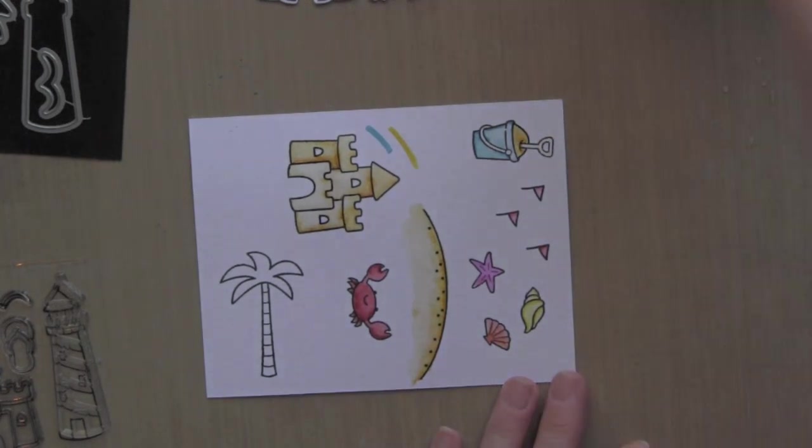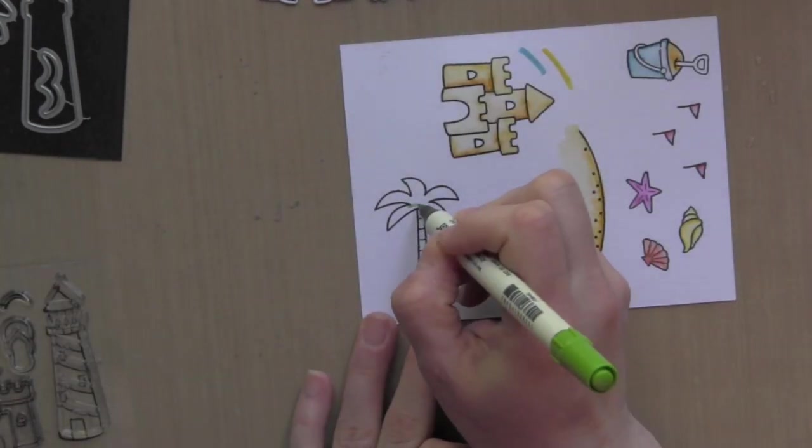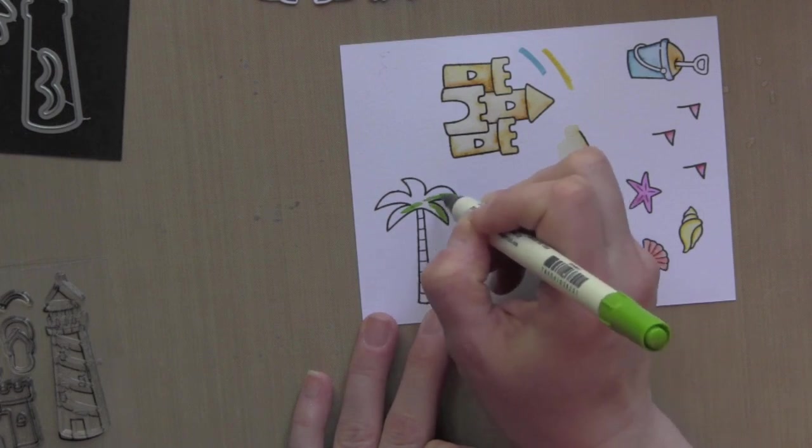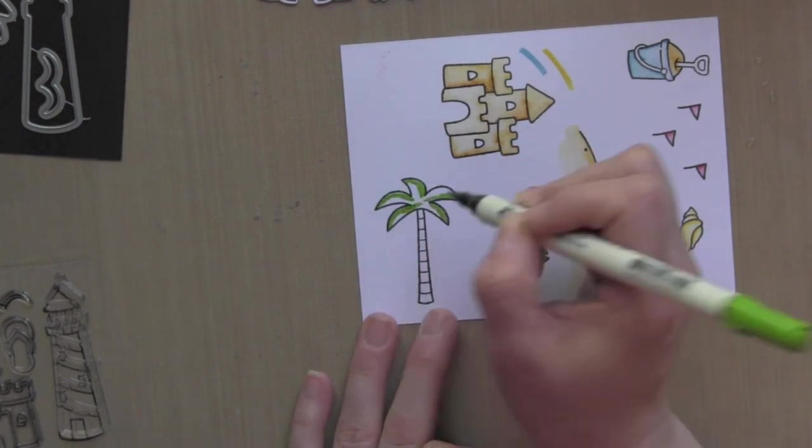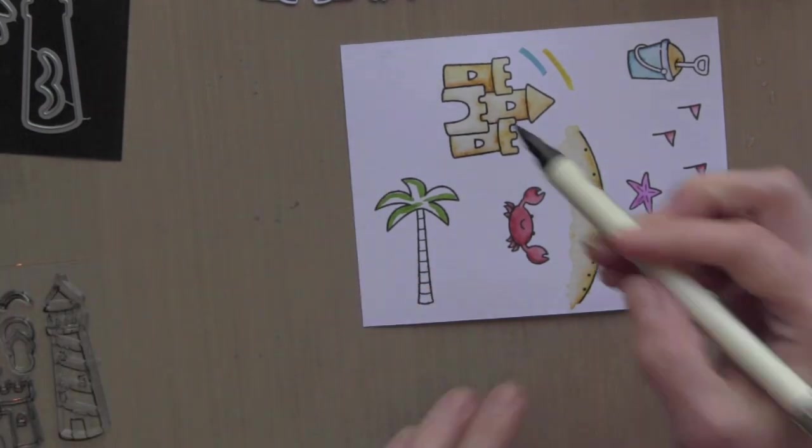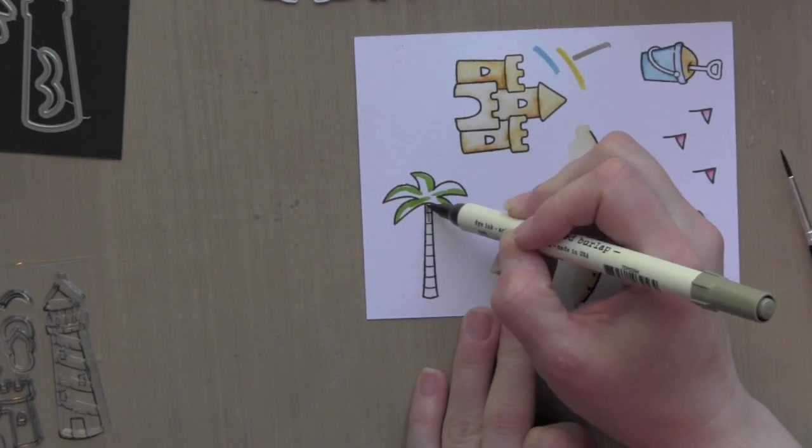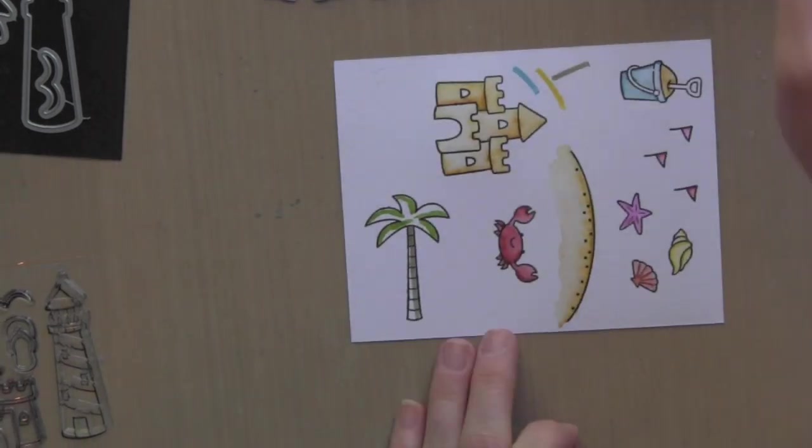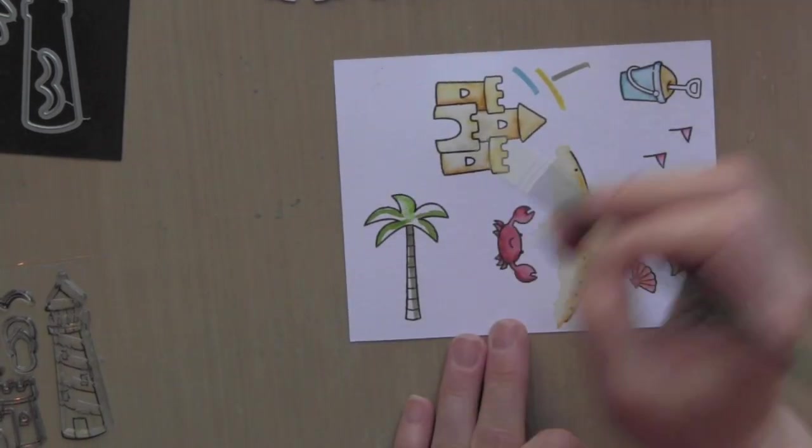It die cuts out so I wasn't too concerned with staying in the line below there since there isn't one. Same colors for the sand in the bucket and then I'm using a little mowed lawn for the top of the palm tree. I'm just laying a bit of color down. You don't have to color in the whole thing. A little frayed burlap for the trunk of the palm tree and then I will go ahead and spread around those colors.